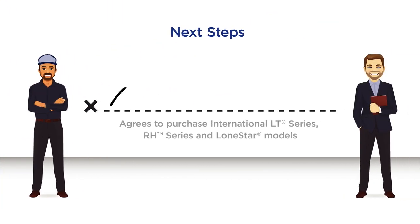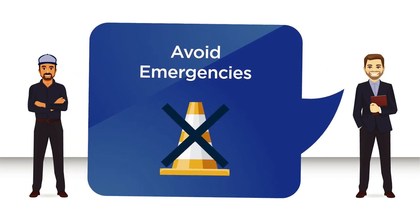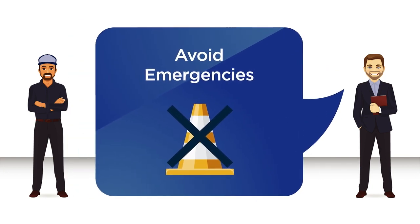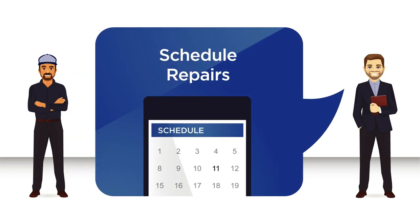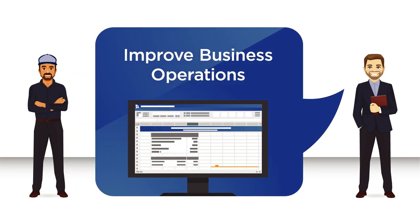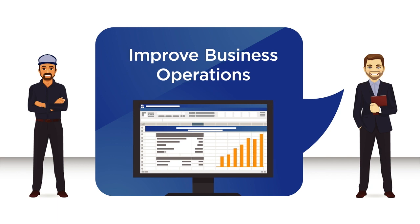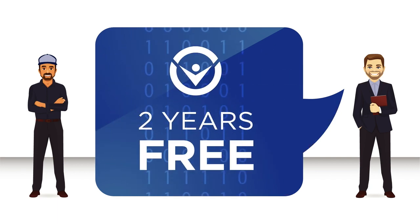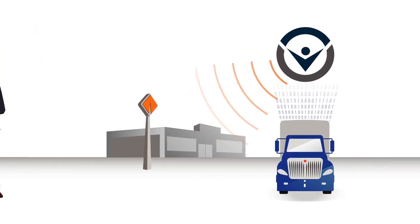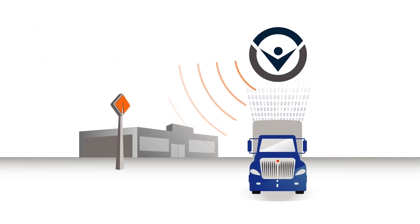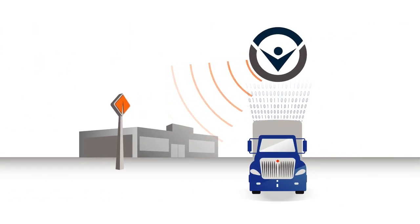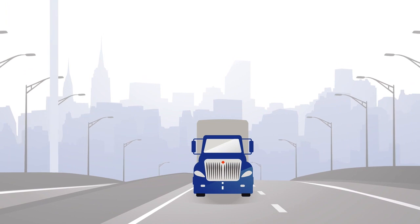When customers purchase an International LT or RH series or Lone Star model, they should be informed about the benefits that On-Command Connection offers and encouraged to enroll into the program. Customers will receive their first two years of service for free. With On-Command Connection, our customers and dealers stand to benefit for the road ahead.